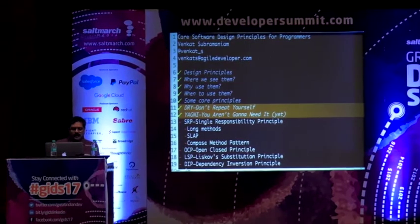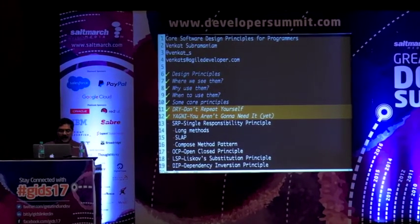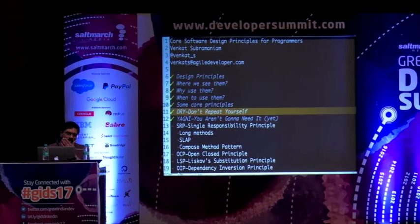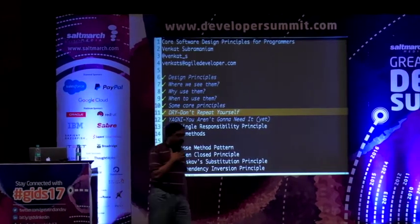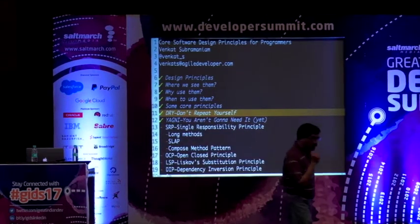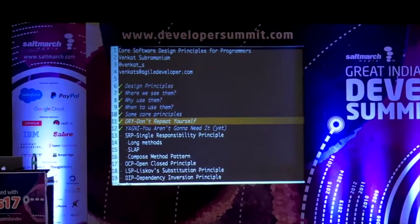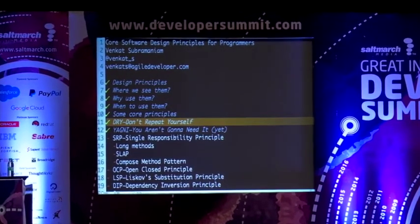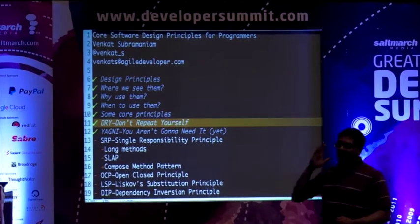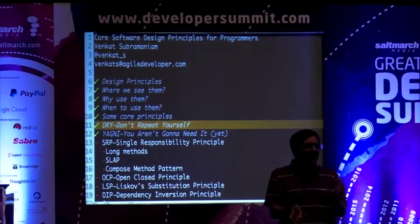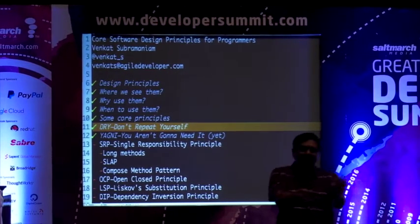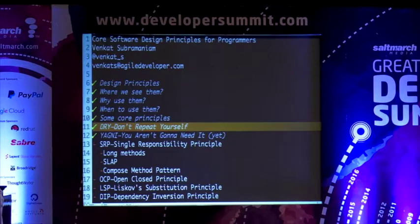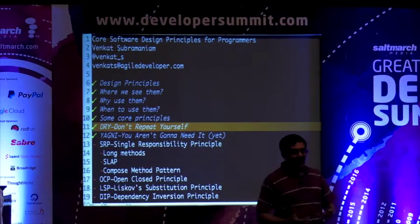We talked about two principles: reduce what you do and remove duplication of code. When it comes to removing duplication, you have to ask: is the code really expressive? I don't want to make the code less expressive just to remove the duplication. Remember, these are not fundamentals you rigidly follow — they're like dials on a radio. Sometimes you have to compromise a bit, and there are trade-offs. There's no compromise to using common sense.